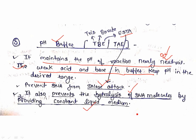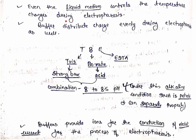The buffer also prevents hydrolysis of the DNA molecule by providing a constant liquid medium. DNA is spread throughout the gel electrophoresis machine in this liquid medium, which prevents hydrolysis. Furthermore, the liquid medium controls temperature changes during electrophoresis — we know that solid objects show temperature changes easily, but liquid dampens temperature fluctuation. This prevents interference with DNA movement and avoids spurious results.